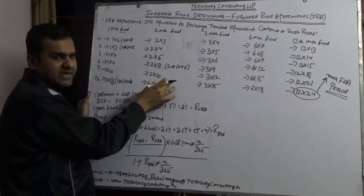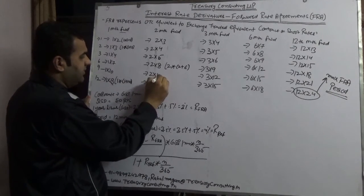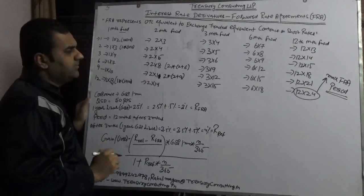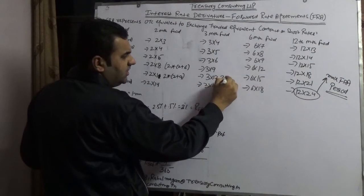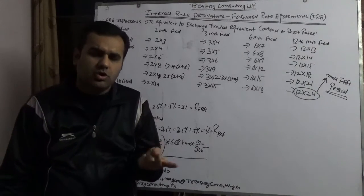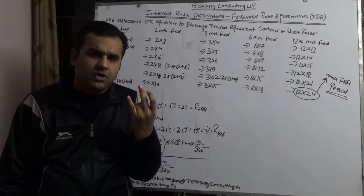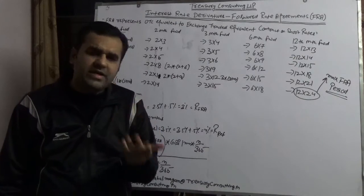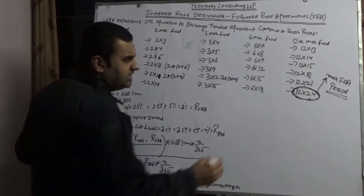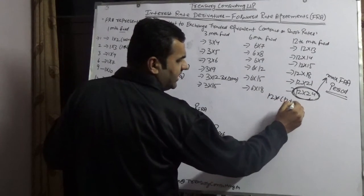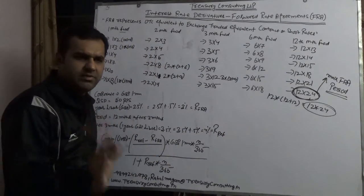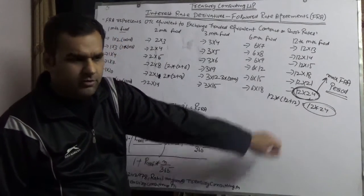Two-months forward for nine months is 2x11 (2 + 9 = 11). Three-months forward for nine months is 3x12 (3 + 9 = 12). Across all currency pairs — Australian dollar, euro, GBP, Swiss franc, Japanese yen, Singapore dollar, Canadian dollar, Chinese yuan, Indian rupee — the maximum FRA tenor globally is 12x24 (12 + 12 = 24).